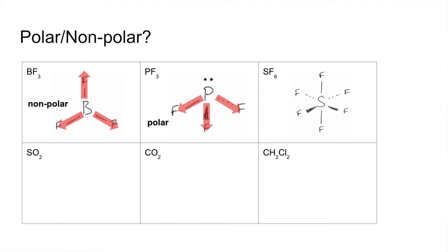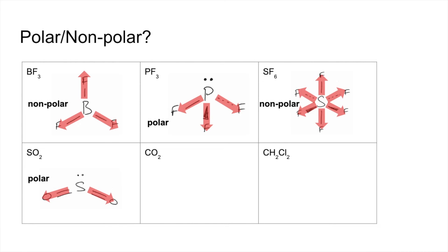SF6 is an octahedral molecule. We've got the S-F polar bond — six of those — but they're all acting in exactly opposite directions, so they all cancel out, making SF6 a non-polar molecule. SO2 is a non-linear molecule due to sulfur being in group 6, giving a lone pair on the sulfur, so straight away we know it's polar because the lone pair breaks the symmetry. CO2, on the other hand, is a linear molecule because carbon is in group 4 with no lone pair on the central atom, so those dipoles cancel out and CO2 is non-polar.